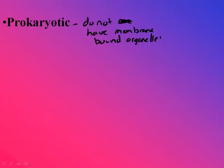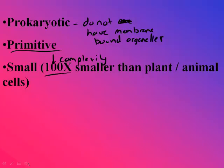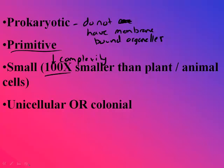So first of all, prokaryotic — what that means compared to the eukaryotic protists: these ones don't have the mitochondria, they don't have the chloroplasts, they don't have a few other things. They're fairly primitive in their complexity, and they're very small — smaller than our cells and plant cells. They can exist as unicells or colonies, so bunches of cells together.